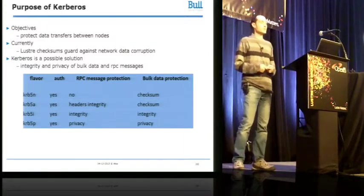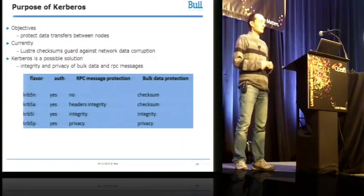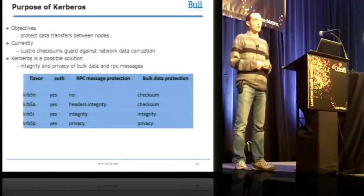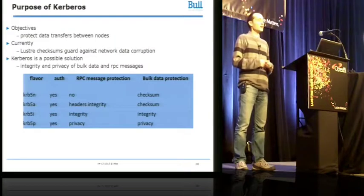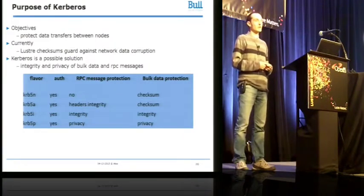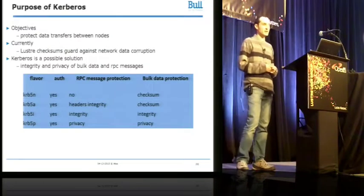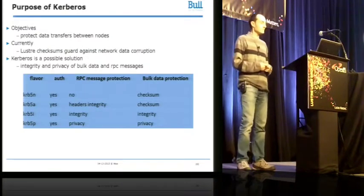Here is a table with the various Kerberos flavors. Kerberos 5N is for authentication only, Kerberos 5A for partial integrity, Kerberos 5I for full integrity, and Kerberos 5P, the strongest one, for privacy.